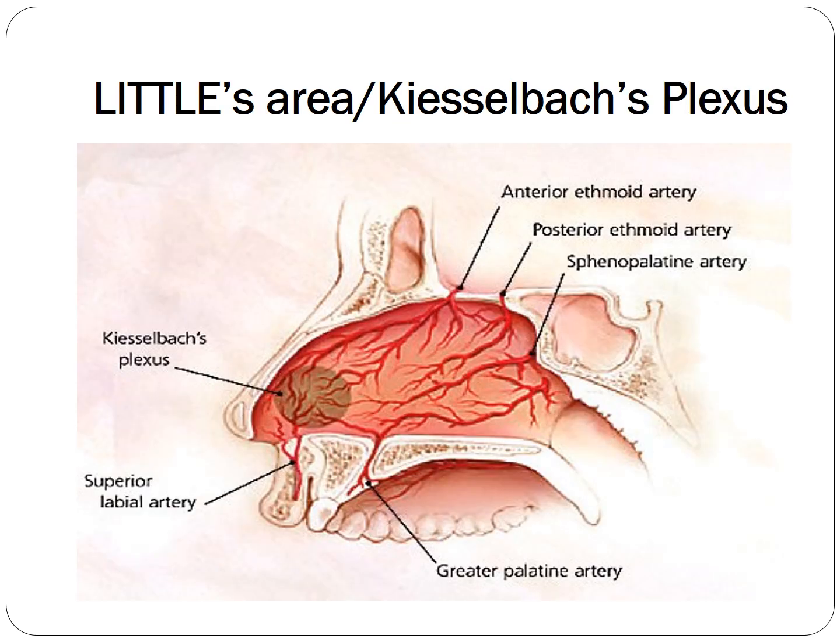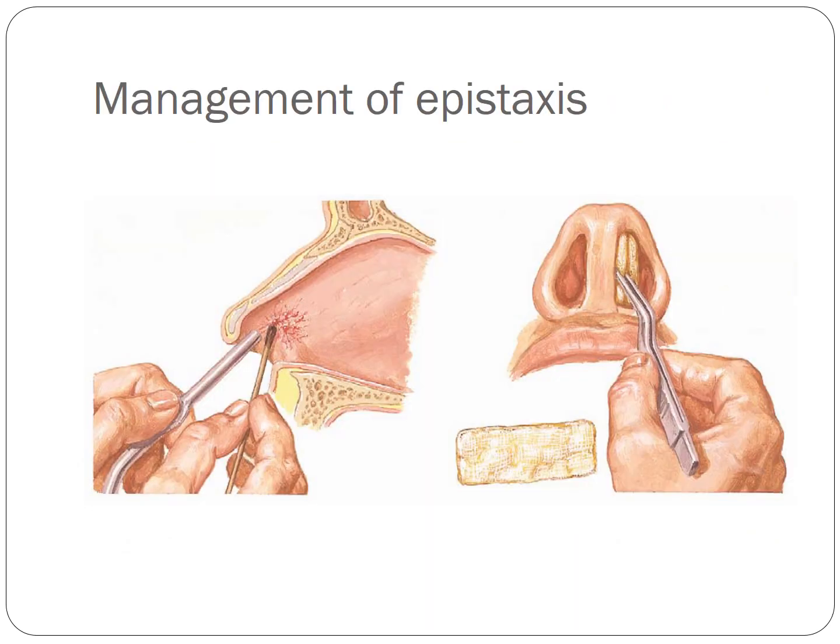Management of epistaxis is done by external nasal packing: sterile gauze dabbed with petroleum gel is placed layer by layer over the bleeding area, exerting pressure to achieve hemostasis. Alternatively, a silver nitrate stick can be used for cauterization. In conditions like hereditary hemorrhagic telangiectasia, where epistaxis is very frequent, a surgical procedure is performed where the affected area is removed and replaced with a dermal graft.